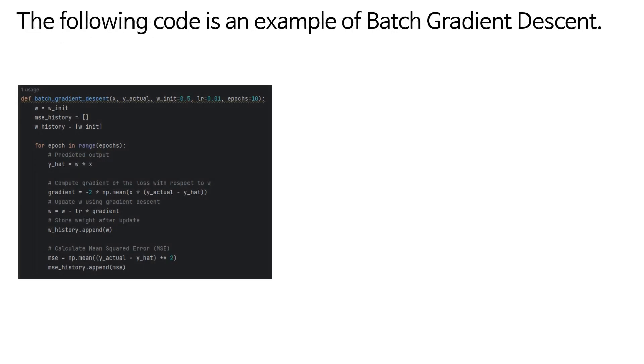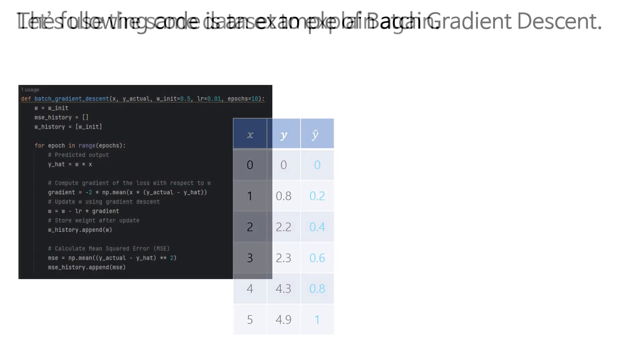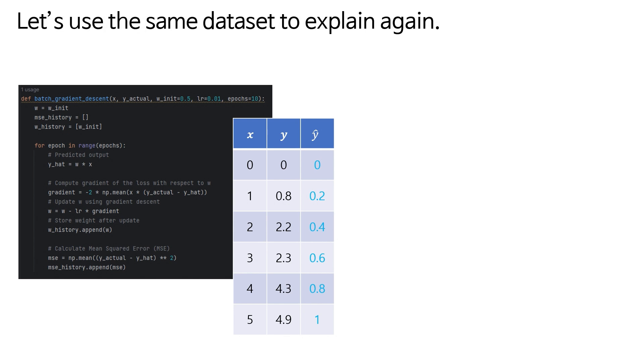The following code is an example of batch gradient descent. Let's use the same data set to explain again.